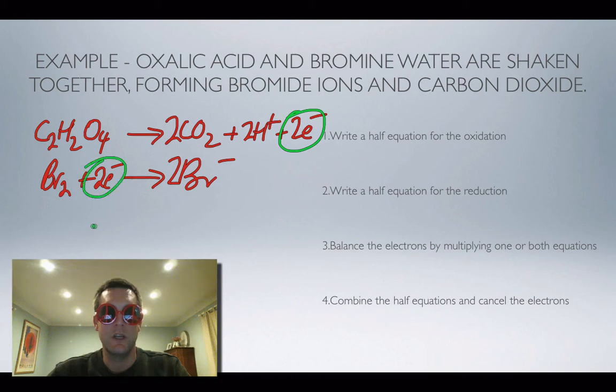Okay, anyway getting back to the process of writing a balanced redox equation. I've got two electrons in both equations. I've got to balance the electrons but they're already balanced and now combine them and cancel the electrons. Well I'm not going to bother putting the electrons in. I'm just going to assume that my two electrons are going to cancel out.